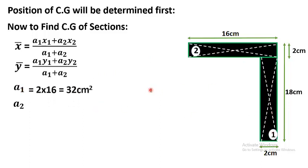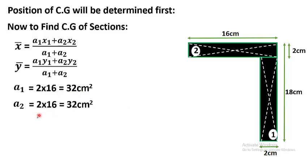The area of a rectangle equals length multiplied by width. For region 1, that is 2 × 16 = 32 cm². Similarly, the area of region 2 is 16 × 2 = 32 cm².